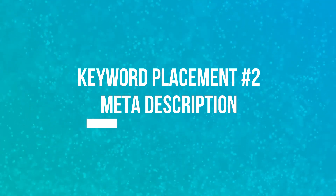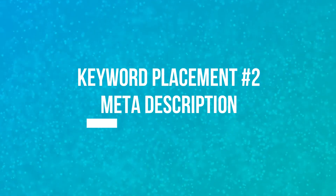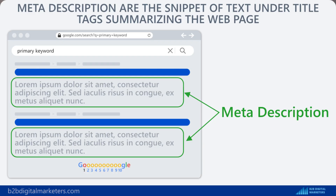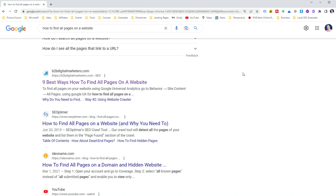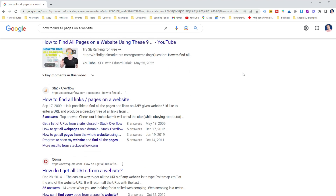The next keyword placement where you should put your primary, secondary, and LSI keywords is in your meta description. A meta description is a short description of a page under the title tag that provides a brief summary of your page, often related to the user query, and it's another important part of your on-page SEO.